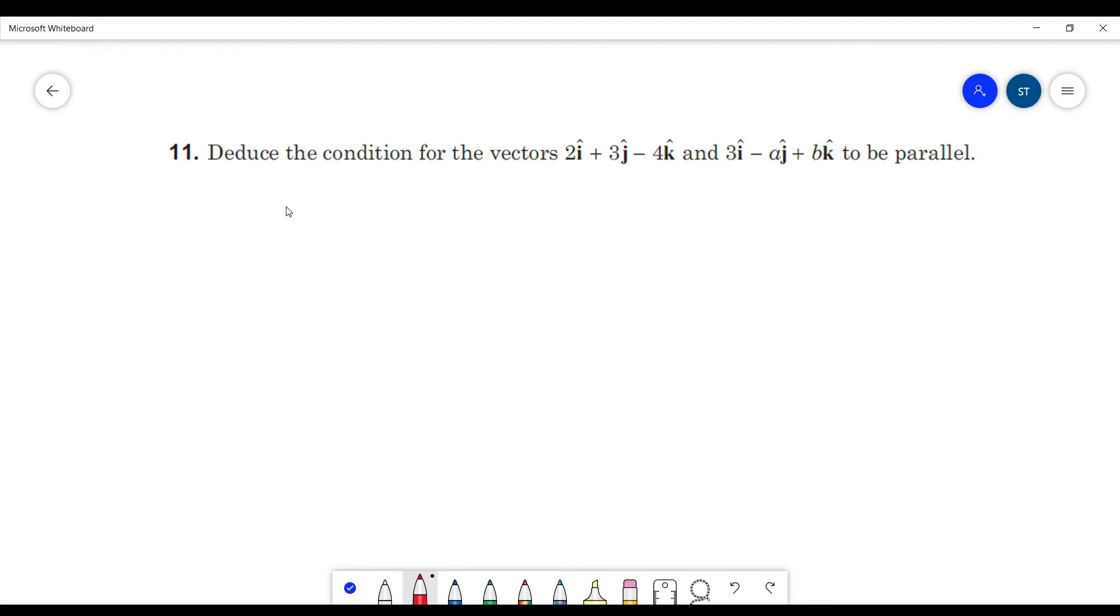So here if we see the two vectors, the ratio of coefficients of i caps is 2 upon 3. Similarly if we see the ratio of coefficients of j caps, that will be 3 upon minus a. And the ratio of coefficients of k cap will be minus 4 upon b.